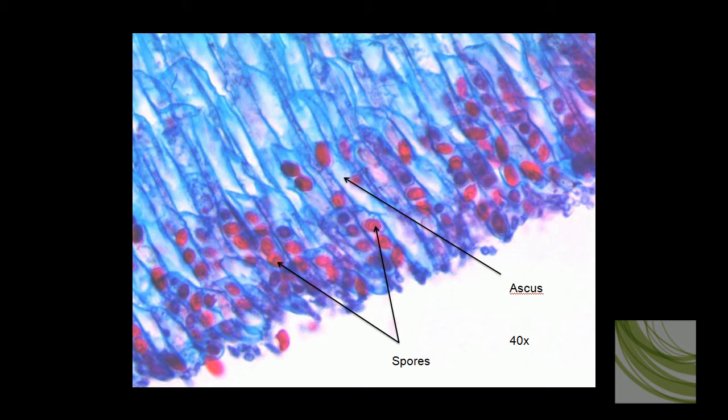This zygote then undergoes meiosis, producing four haploid nuclei. For review purposes, remember that diploid means the cell has a full set of chromosomes for that organism, while haploid means it only has half the number of chromosomes a cell in that organism usually has.